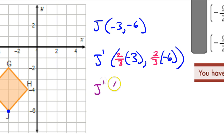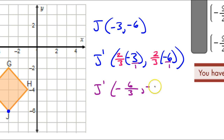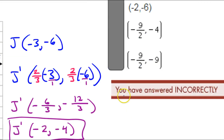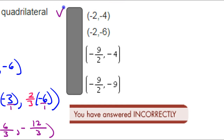So, point J prime: a positive times a negative is a negative. Think of −3 as −3 over 1. 2 times 3 is 6, and 3 times 1 is 3, giving −6/3. This will also be negative: 2 times 6 is 12, and 3 times 1 is 3, giving −12/3. Then it's just a matter of reducing: this will be −2 and this will be −4. So the answer is (−2, −4).